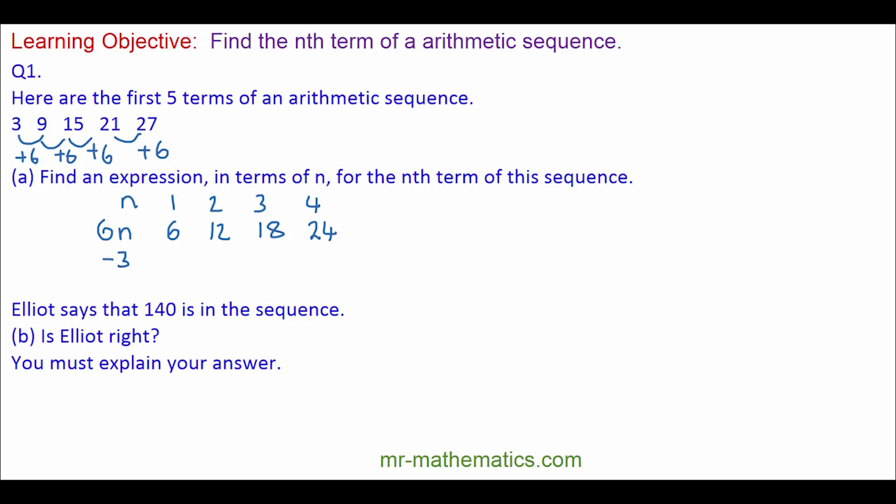Now the difference between 6 and 3 which is the first term is negative 3. So 12 take away 3 is 9, 18 take away 3 is 15. So the nth term is 6n minus 3, 6n minus 3.